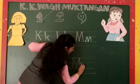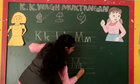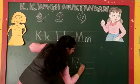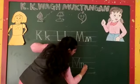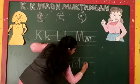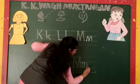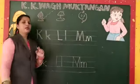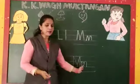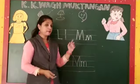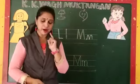For small m, draw a slanting line, then go and come into the middle, then again go up and come into the middle. This is small M. M says ma.